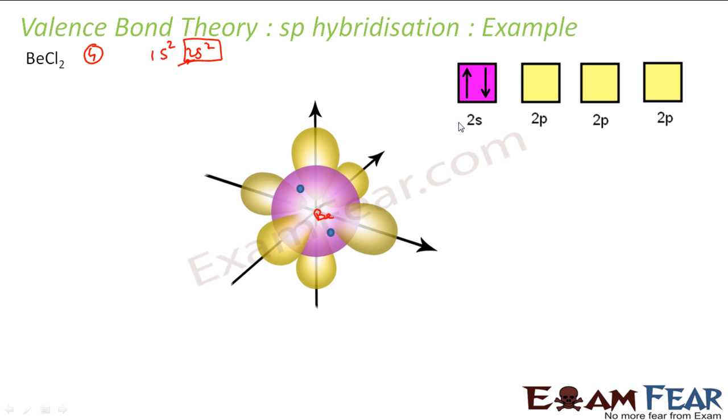Now what will happen? One electron will go from here to here. You must have seen it just went. And it becomes sp hybridized. 1s here, sorry, this was 2s, it was 2p. So 2s and 2p orbitals hybridized to become 2 sp hybridized orbitals. You will see how it works.